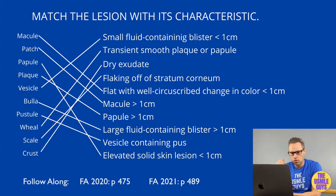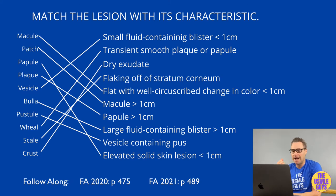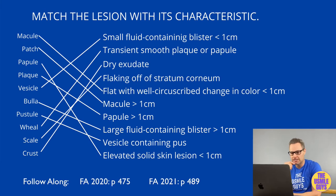First, we have the macule. Macules are flat lesions with well-circumscribed changes in skin color, and the lesion is going to be less than one centimeter. Think of a freckle anytime you hear the term macule. Next, we have a patch, which is just a macule that's over one centimeter in size. Think of a birthmark when you hear the term patch.